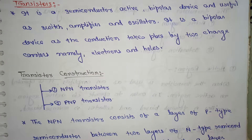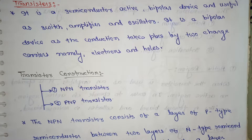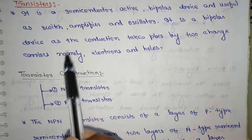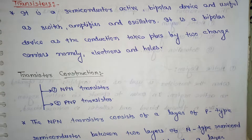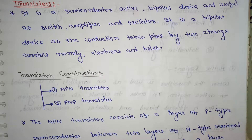Hi friends, today I am going to discuss the very important topic that is transistors. Today we will see first what is a transistor. It is a semiconductor active bipolar device, useful as a switch, amplifier, and oscillator. It is a bipolar active device.